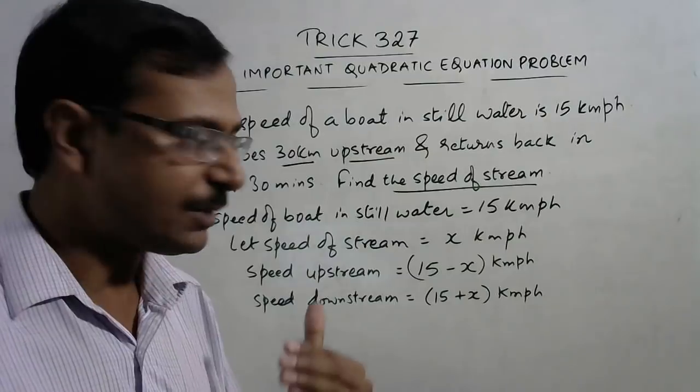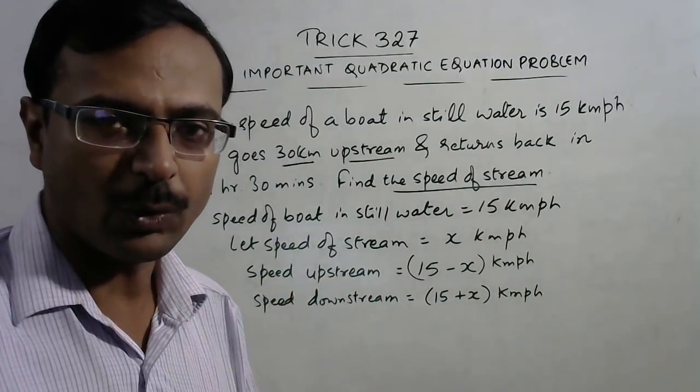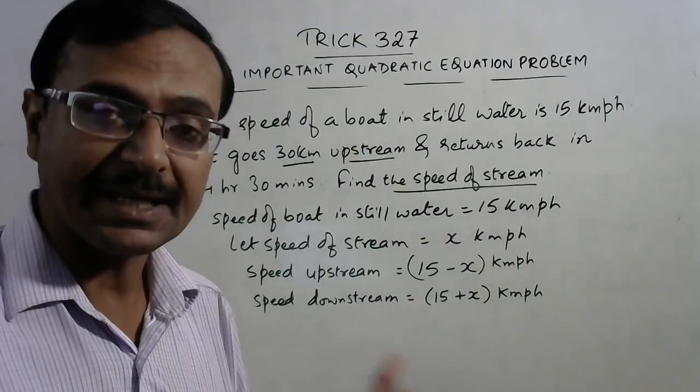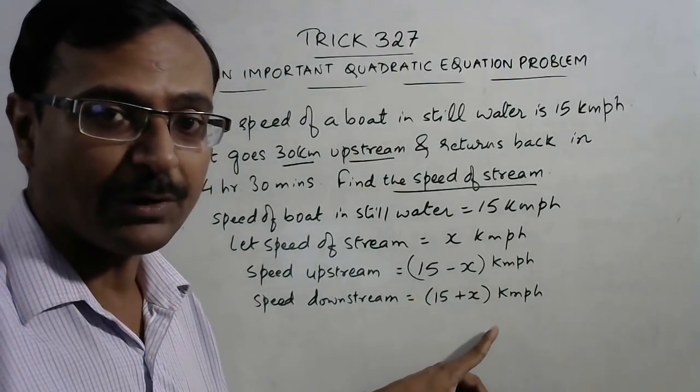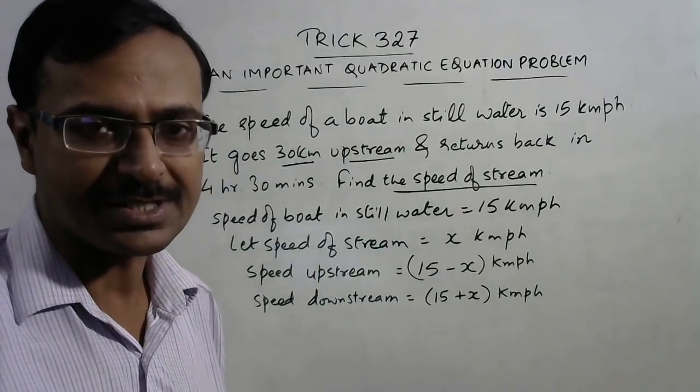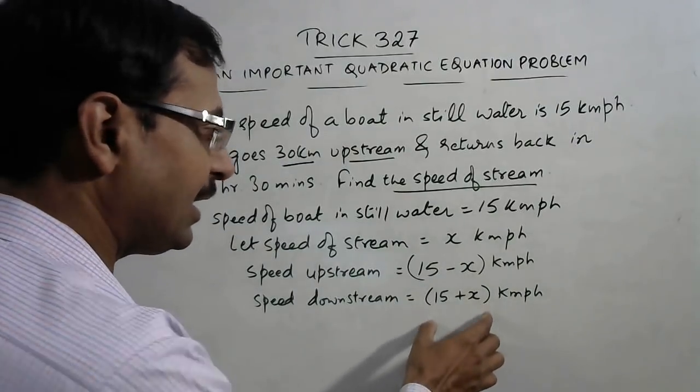But when it moves along with the flow of the river, the speed is increased. So 15 is the original speed and x, the speed of stream, is added to the original speed. So this is the new speed.